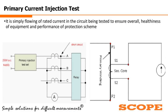The basic idea is that we need to flow a rated current in the circuit we need to test, to ensure or check the overall healthiness of the equipment and to check the performance of the protection scheme. Here you can see the primary testing equipment is connected directly to the primary side of the CT — that is P1 and P2 — and we inject the rated current from the primary side. After that we check the secondary current from the secondary side of the CT to ensure its healthiness. This same approach applies for circuit breakers and relays as well.